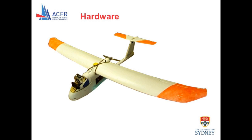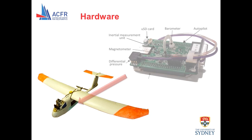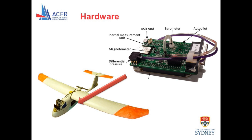Here we have a typical fixed-wing application which will be used throughout this presentation. Now here's the custom printed circuit board. It comprises everything necessary for autonomous flight, which includes a microcontroller, an array of sensors, onboard data logging, and a connector for communications, actuation, and power. The hardware development occurs offline and is largely non-iterative, so refinement is not normally necessary.